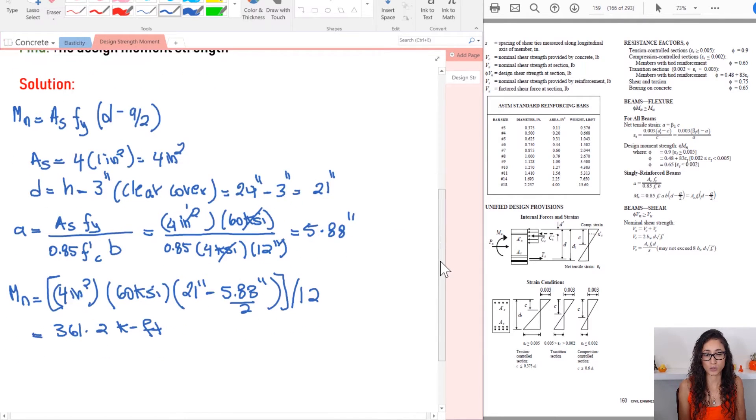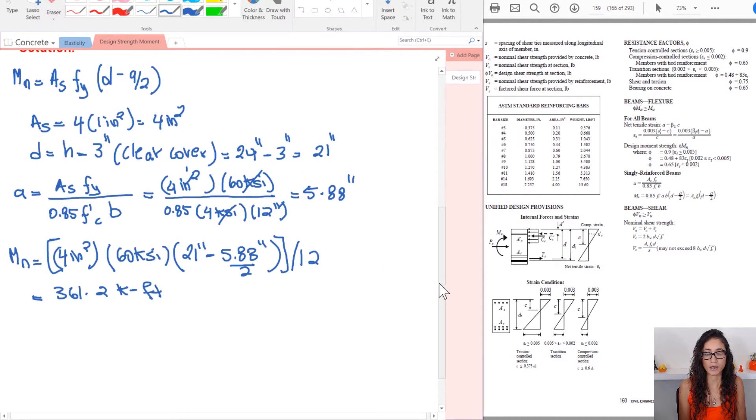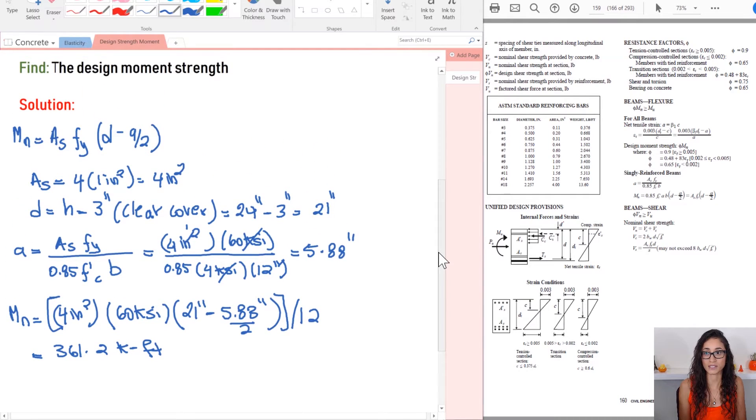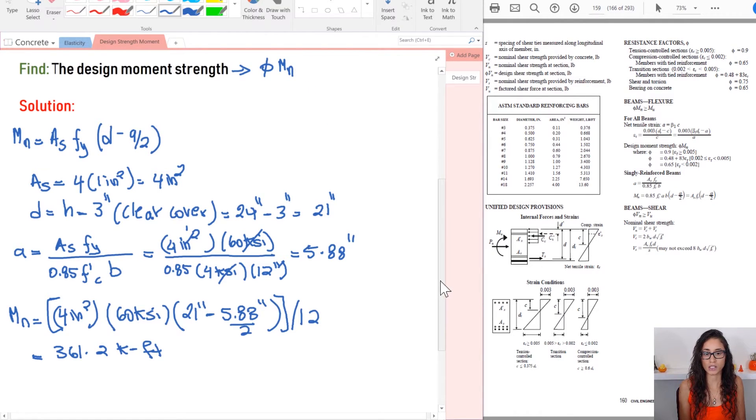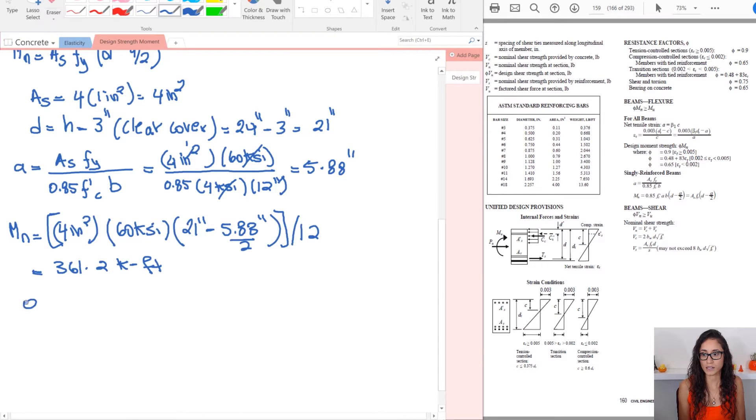Okay. So this should give you an answer of 361.2 kips feet. But we're not done yet. So we just calculated MN, but the answer asks for the design moment strength, and this means phi MN. So we need to calculate phi now. So to calculate phi, it's a little bit tricky. So there's no straightforward equation for it.